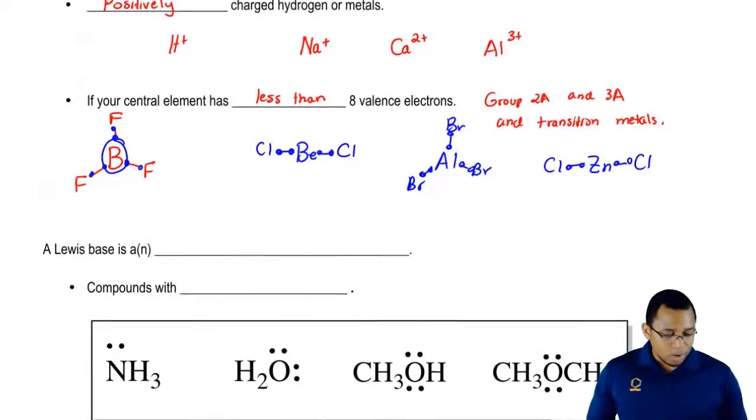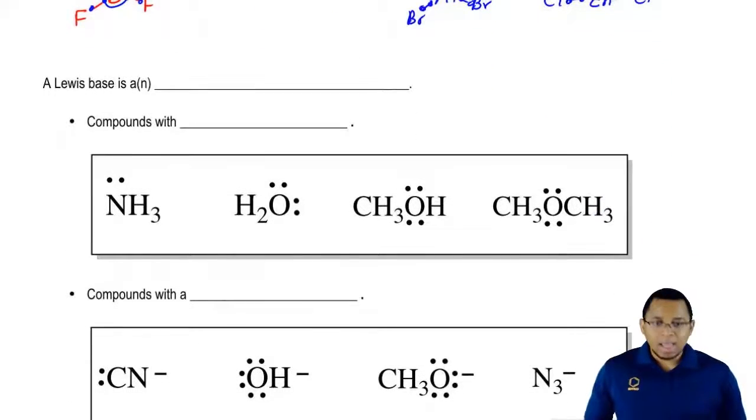If the Lewis acid is an electron pair acceptor, that would have to mean that the Lewis base is an electron pair donor.